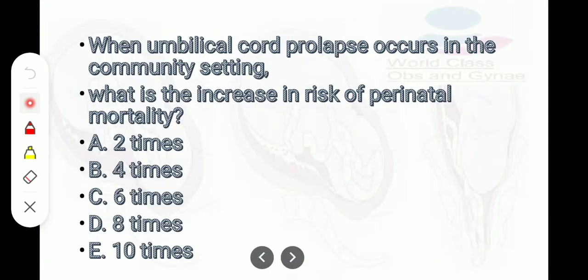Coming to exam questions. When umbilical cord prolapse occurs in the community setting, what is the increased risk in perinatal mortality? The answer is 10 times.